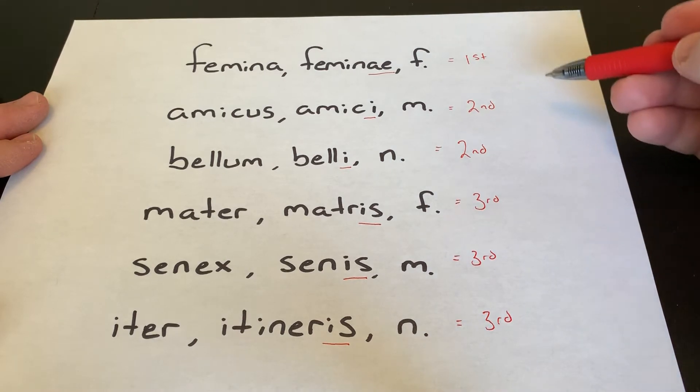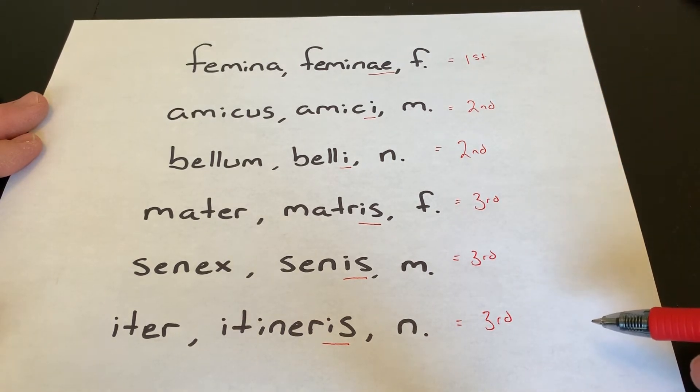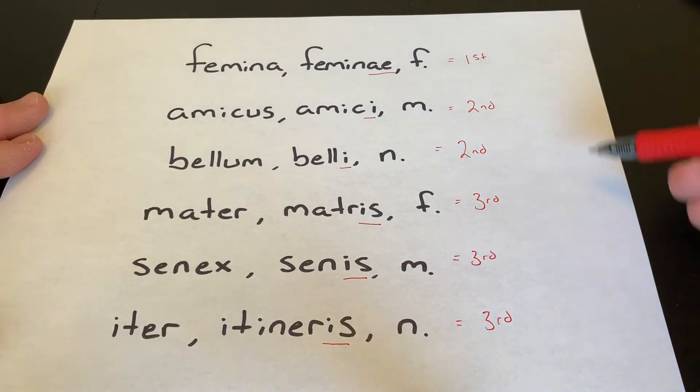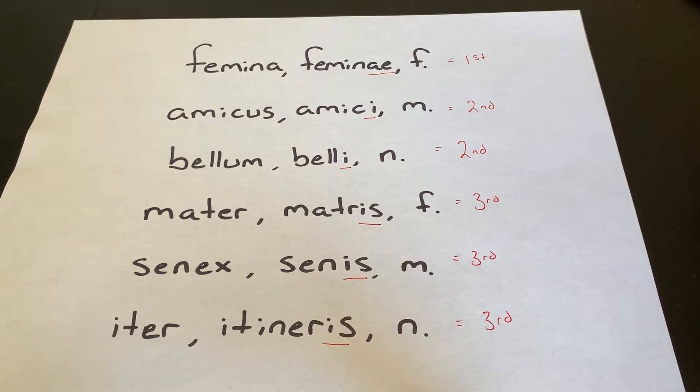So that is how you identify the declension of a noun. And it's also going to be how you identify the stem of a noun. Because to identify the stem of a noun, which is what you attach all of the other endings to, you remove that genitive ending.